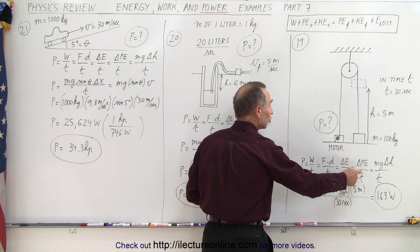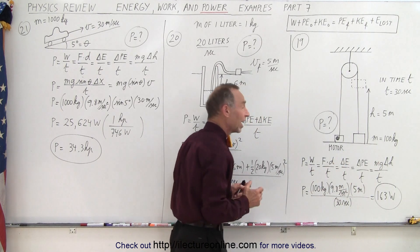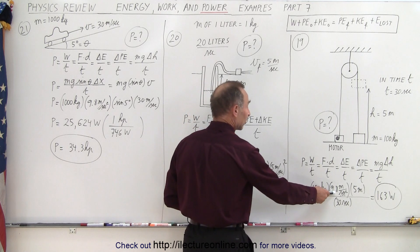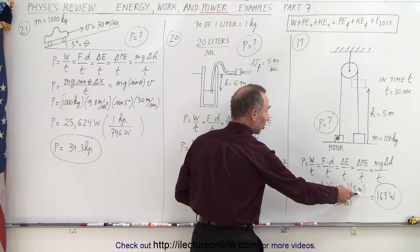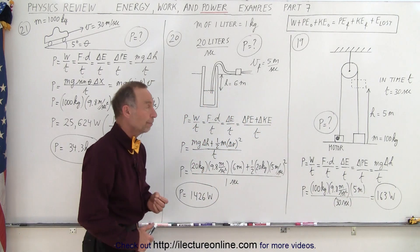It's simply the change in potential energy over time, and so since m and g are constants it would be mg times the change in the height over time. So in this case the mass times acceleration due to gravity times the change in height, 5 meters over 30 seconds, gives us the power required to do so.